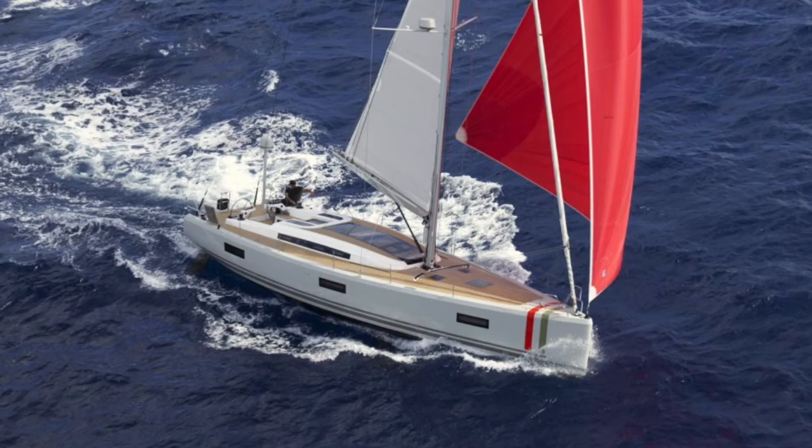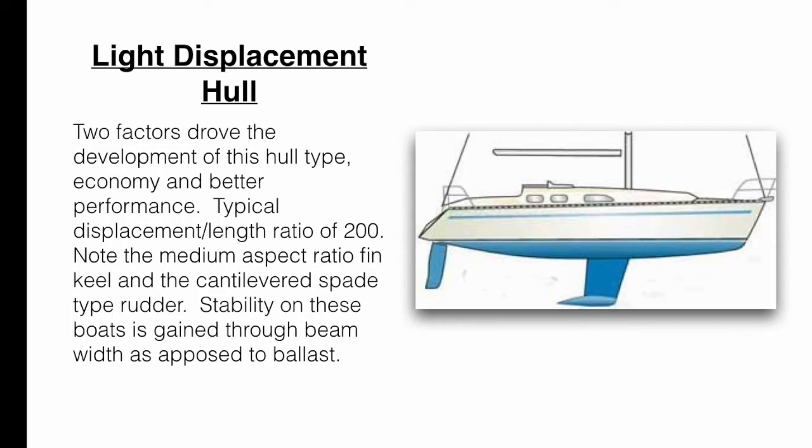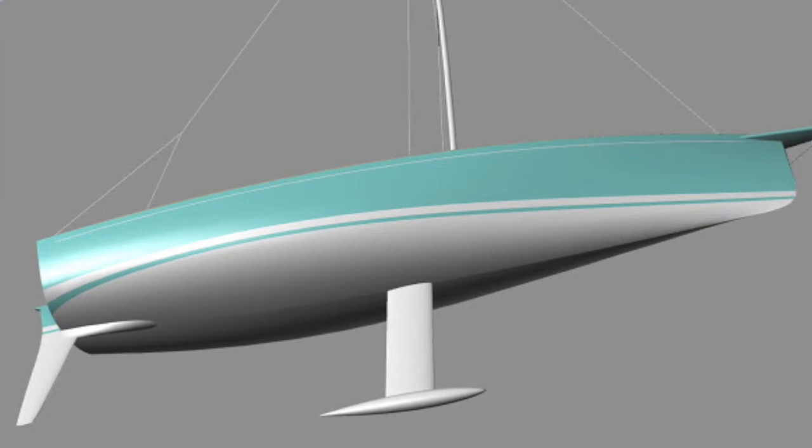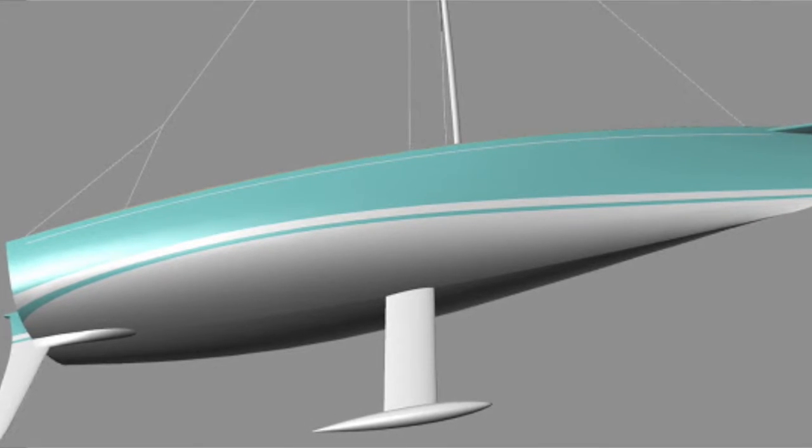Now these ultralight displacement boats, they share many of their characteristics with the previous category, the light displacement. But they tend to be beamier, they're lighter, and they have a much deeper keel.